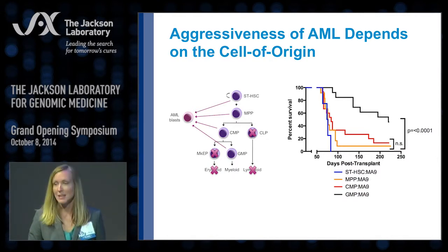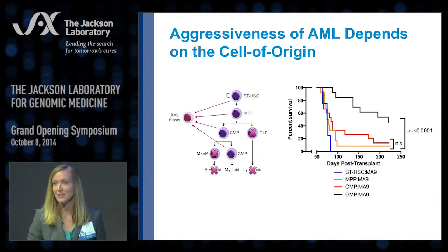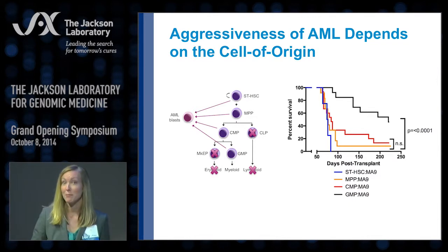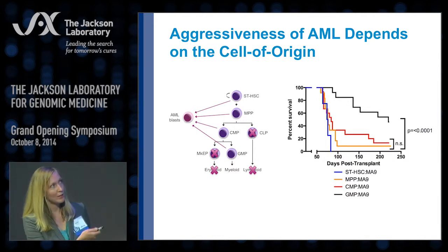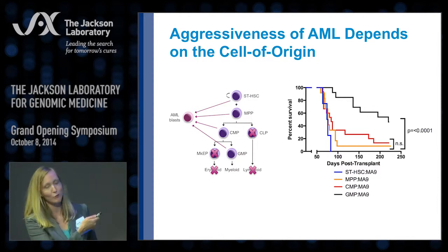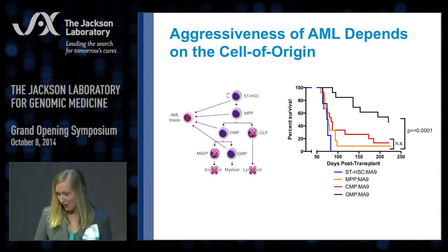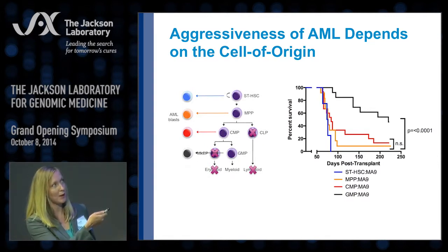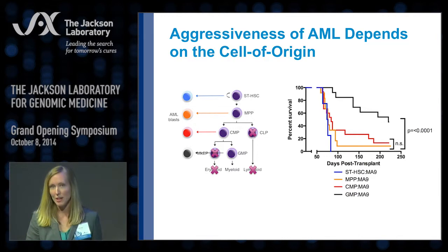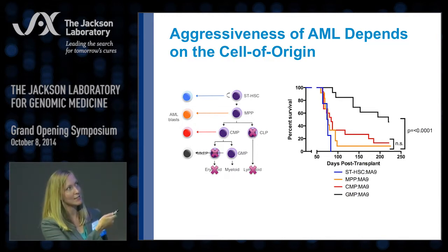This difference is independent of oncogene dosage and is not reflected in the phenotype of the leukemias that arise — they are morphologically identical. So rather than a model where all cell types can be transformed to give rise to a common AML, we think it should look more like distinct populations of normal stem and progenitor cells being transformed to give rise to AML with distinct potency or aggressiveness.